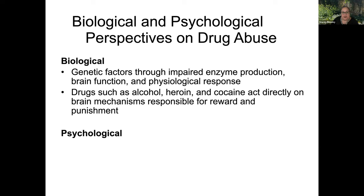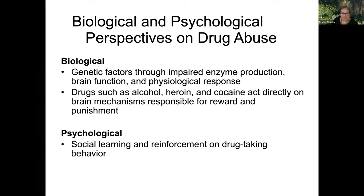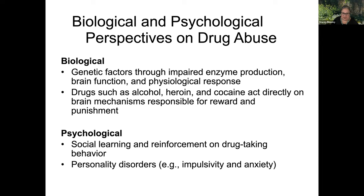When it comes to biological and psychological factors, genetic factors through impaired enzyme production and brain function play a role. Drugs such as alcohol, heroin, and cocaine act directly on brain mechanisms responsible for reward and punishment. Psychologically, social learning and reinforcement shape drug-taking behavior. There may also be personality disorders involved — like a tendency to be impulsive or having chronic generalized anxiety, where a person constantly feels anxious day in and day out, as opposed to situational anxiety from events like moving or a death in the family.